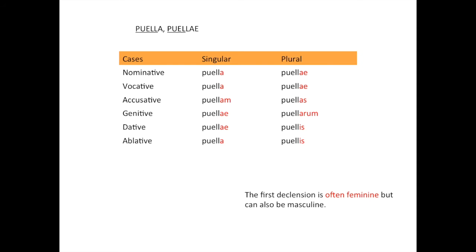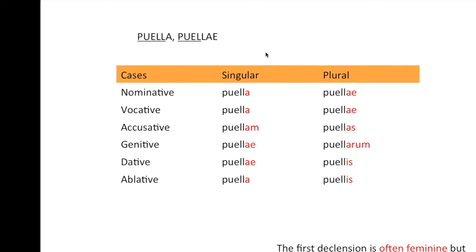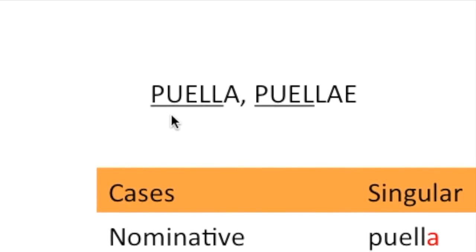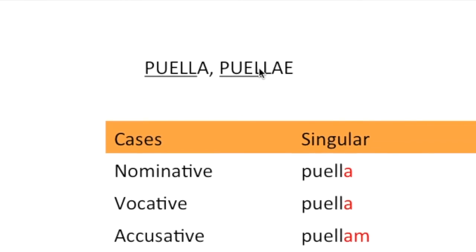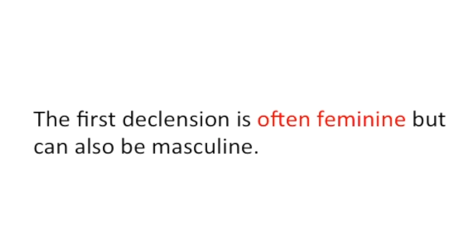Now let's take a look at declensions. Declensions are basically groups or families of nouns, and there are five, but I'm going to cover the first three. The model noun we've been using, 'puella,' meaning 'girl,' is written in the dictionary as 'puella, puellae.' To decline the word, you first need to find the stem — you take 'puella' and remove the 'a,' or take 'puellae' and remove the 'ae' for the first declension. The endings are then added to the stem. The first declension is often feminine, but it can also be masculine.